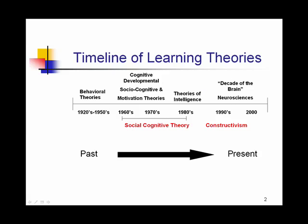These theories fit in the time frame — the social cognitive theory in particular — of the 1960s through the 80s. It was developed around the same time frame as the cognitive developmental theories as well as some of the motivation theories. Constructivism as a theory appeared close to the 1990s.